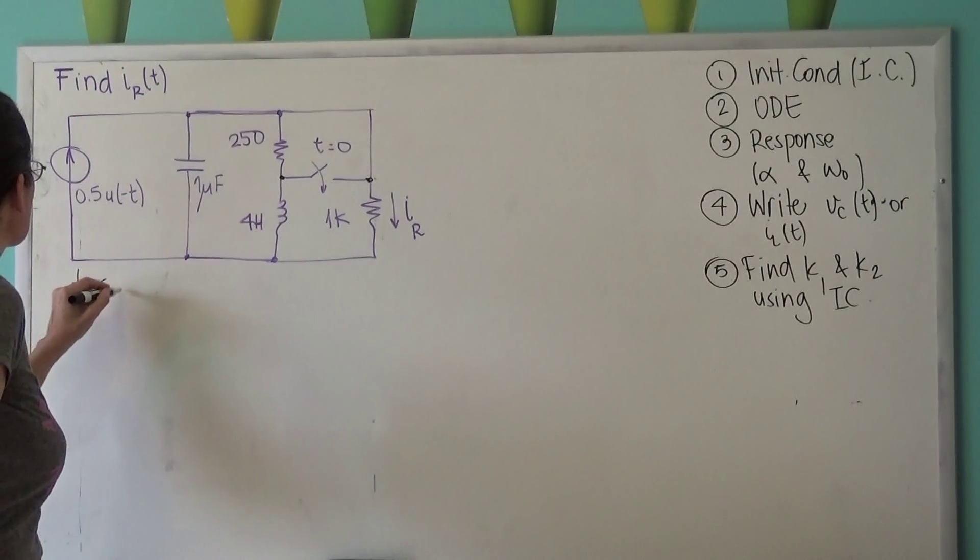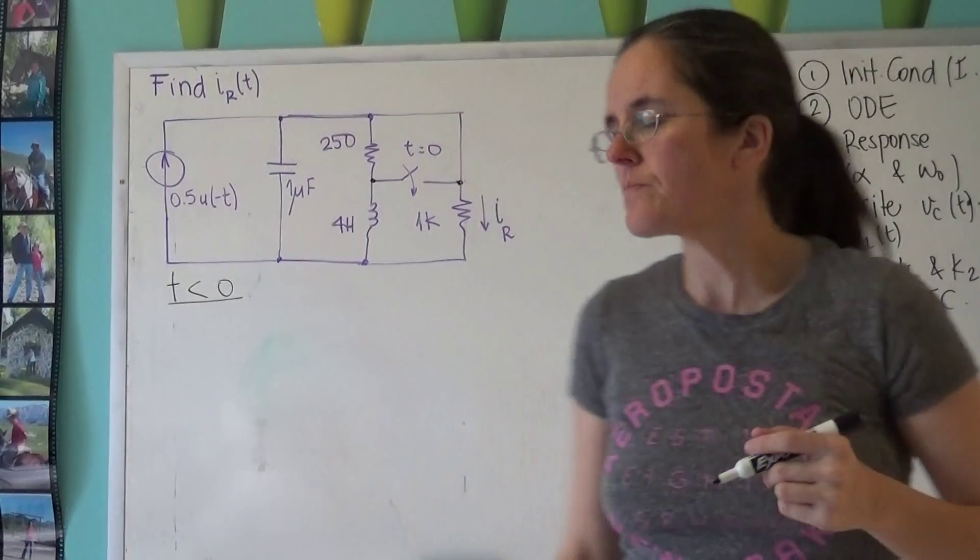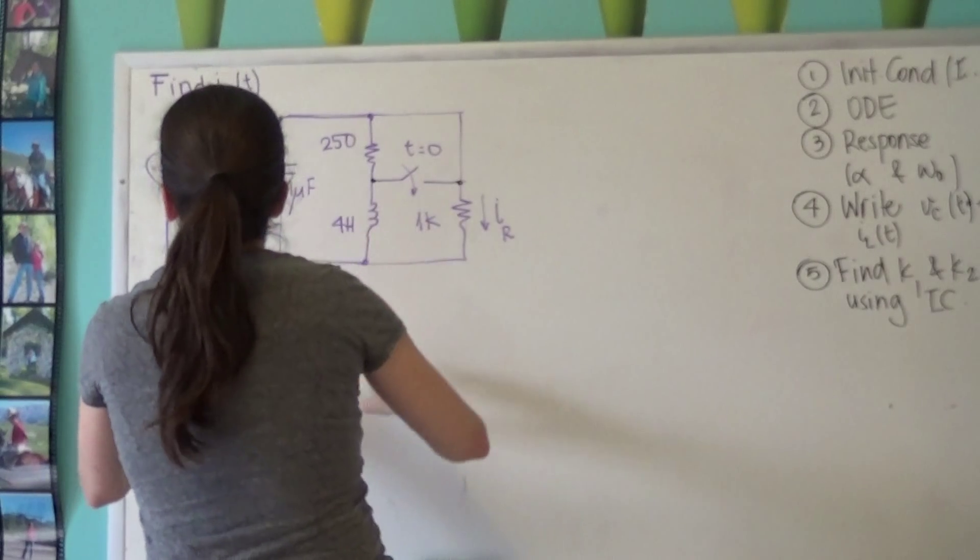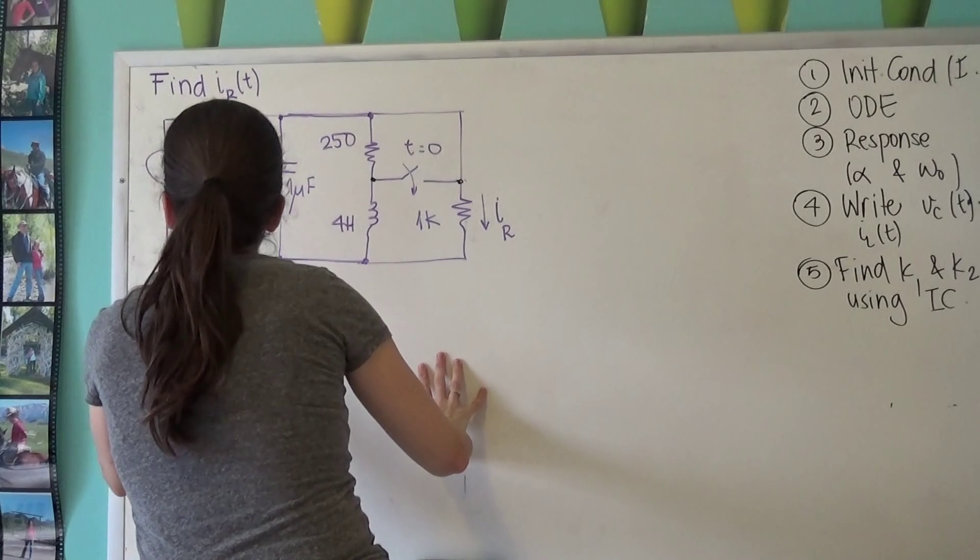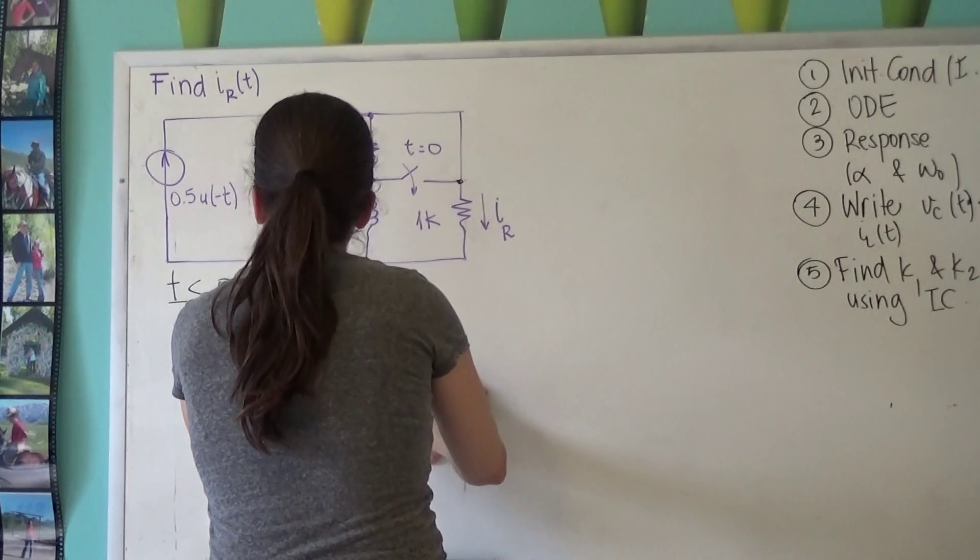So to find the initial conditions, we've got to draw two circuits. One for all times before zero. And that means this is on, and this is open. And I'm going to also draw the capacitor, 0.5. The capacitor is going to be open. And the inductor is going to be a short.